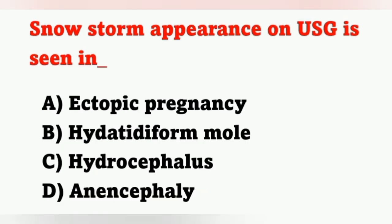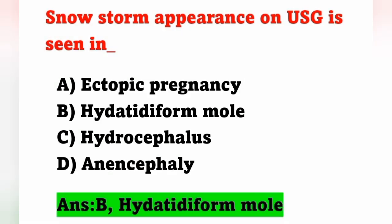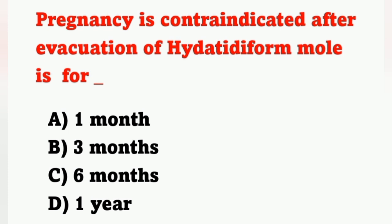The next question: snowstorm appearance on ultrasound is seen in — options: A: ectopic pregnancy, B: hydatidiform mole, C: hydrocephalus, D: anencephaly. Snowstorm appearance on ultrasound is a characteristic feature of hydatidiform mole — option B is the correct answer.